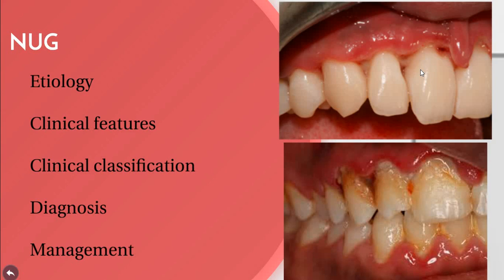Regarding clinical features, NUG is most common in the age group of 16 to 30 years, but can be seen in children from low socioeconomic groups with marked malnutrition. The onset is sudden, with pain, tenderness, profuse salivation, and a peculiar metallic taste. There is spontaneous bleeding from the gingival tissue, loss of sense of taste, and diminished pleasure from smoking.